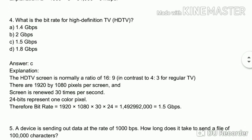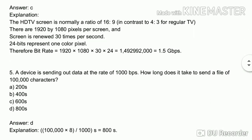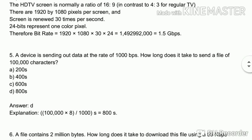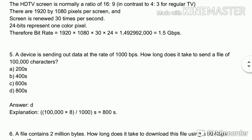The required bit rate for HD TV is 1.5 Gigabits per second. Fifth question: your device is sending out data at the rate of 1000 bits per second. How long does it take to send a file?